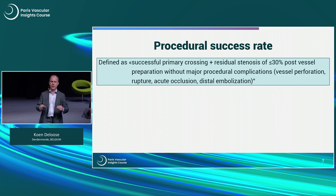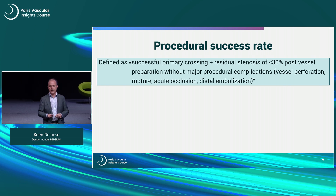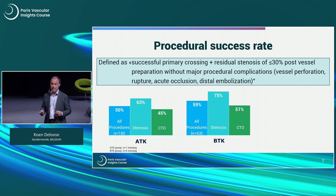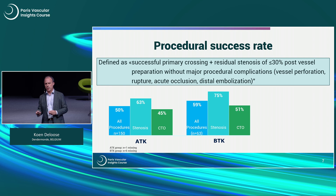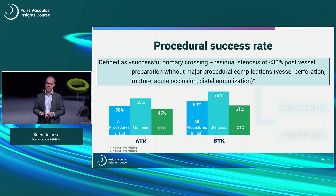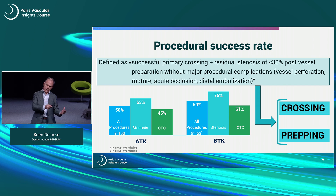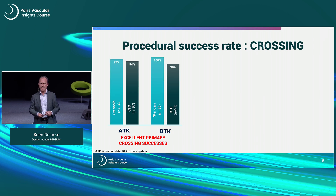The procedural success rate — defined as successful crossing and residual stenosis after vessel preparation without major complications — was overall above the knee: 50% overall, 63% for stenosis, and 45% for occlusions. Below the knee, the procedural success rate was 59%. This is a combined ratio of crossing and vessel preparation.